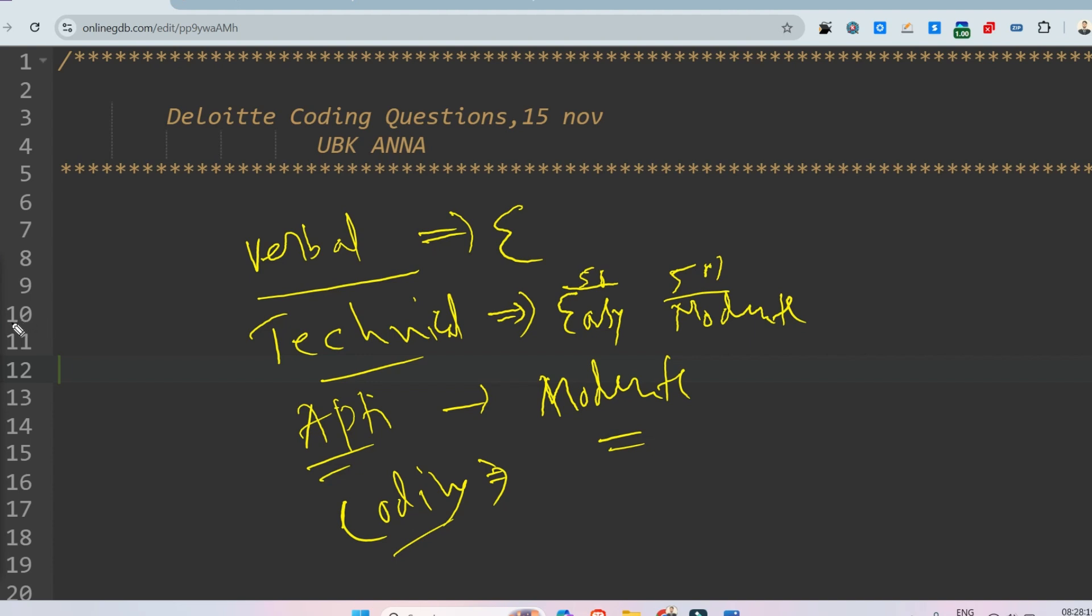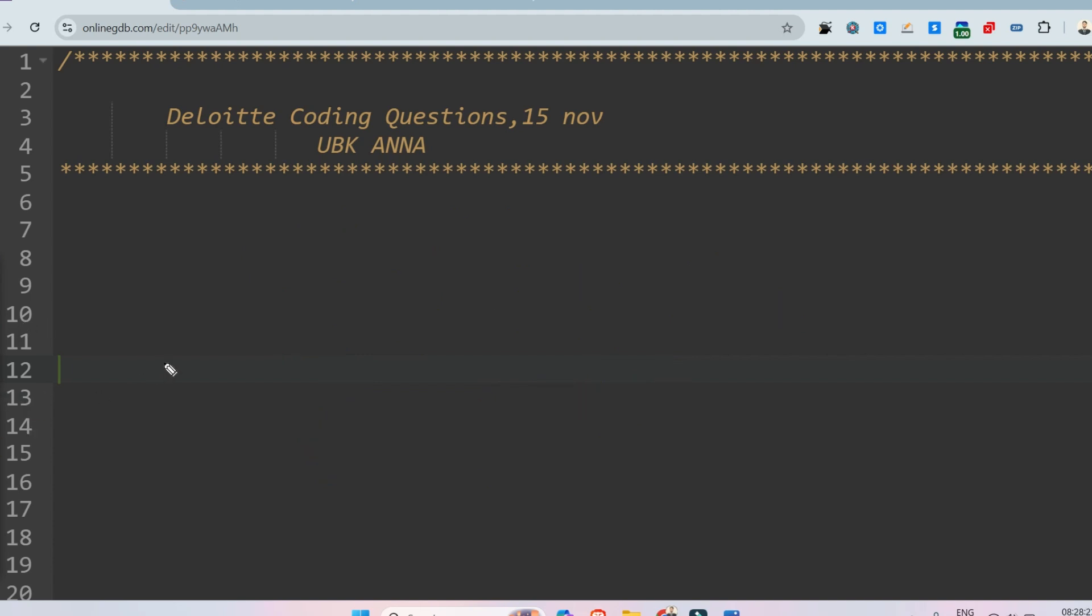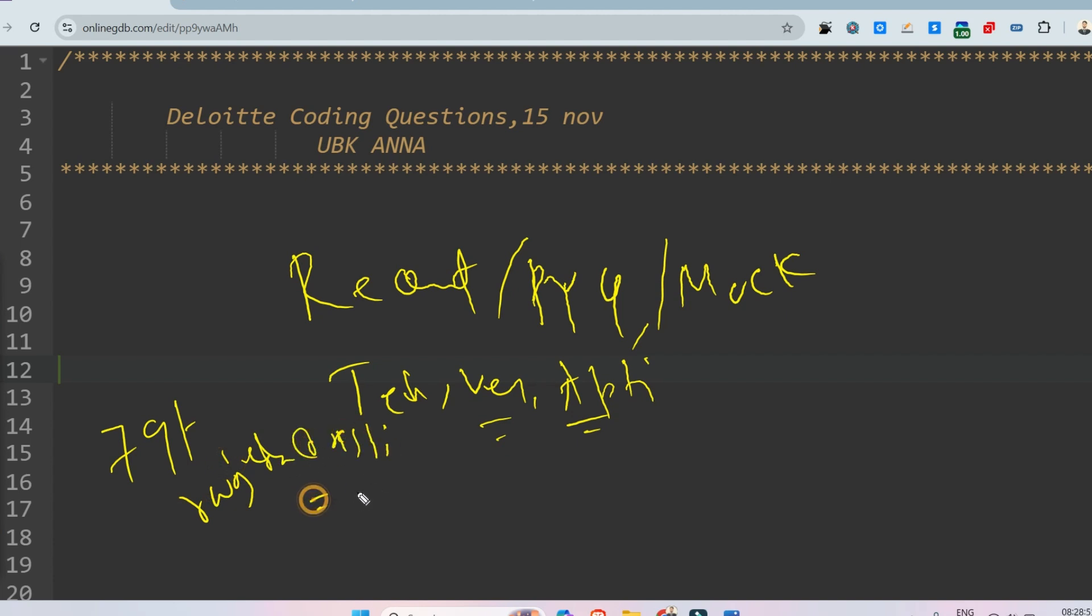But before that, if you want the prime materials of Deloitte in which we have included all the recent questions with answers, all the previous year questions, all mock tests, all technical questions, verbal ability, aptitude and all things are there, if you want then just pay 79 rupees at our UPI ID given in the description box. Send the screenshot of the payment to our Instagram, you will get the materials at your mail.